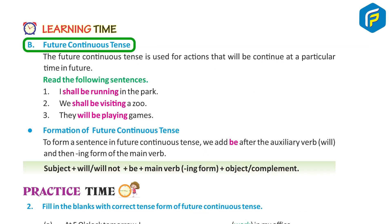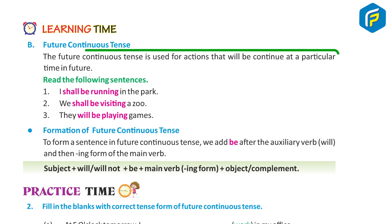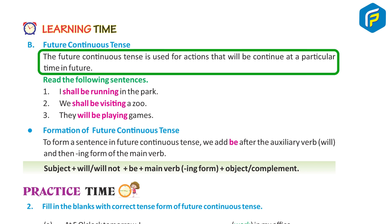Future Continuous Tense: The future continuous tense is used for actions that will be continuing at a particular time in the future.